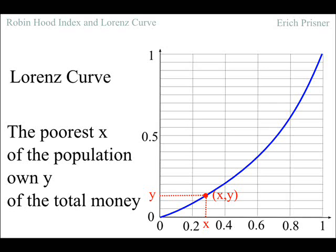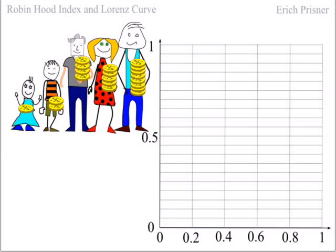If the Lorenz curve goes through the point 0.4, 0.2 for instance, then the poorest 40% of the population own 20% of the total money. In our example, the Lorenz curve is constructed as follows.